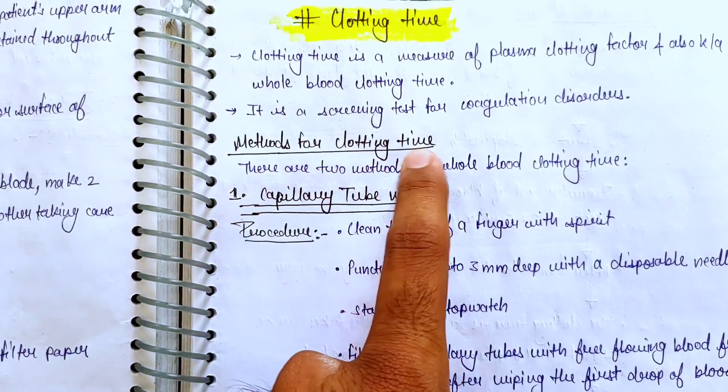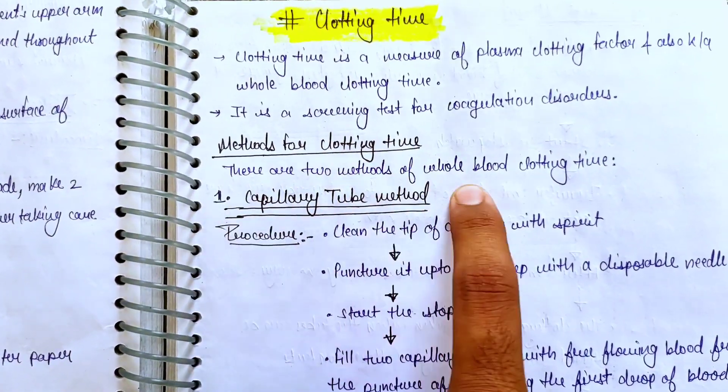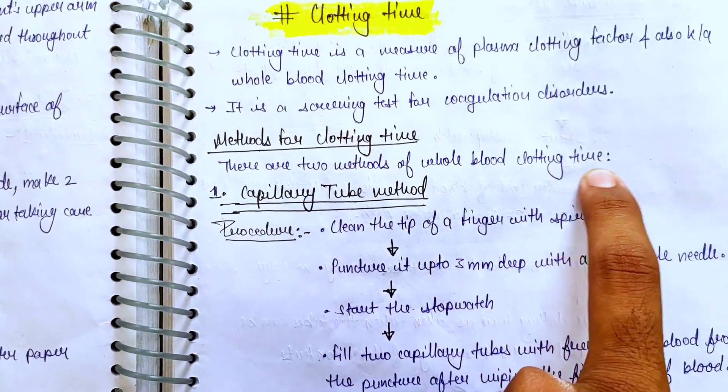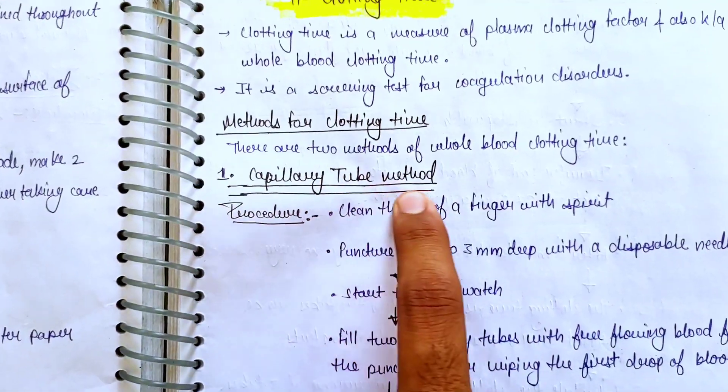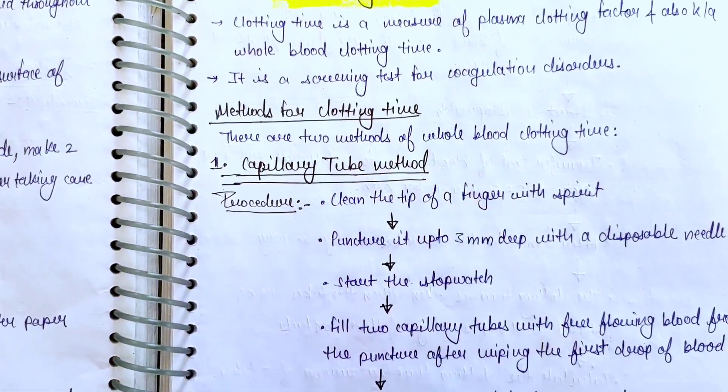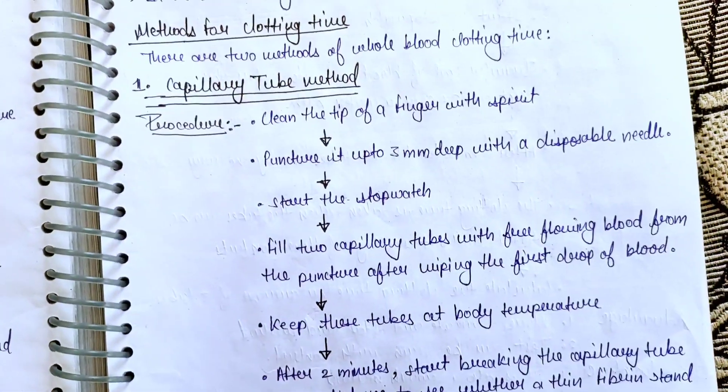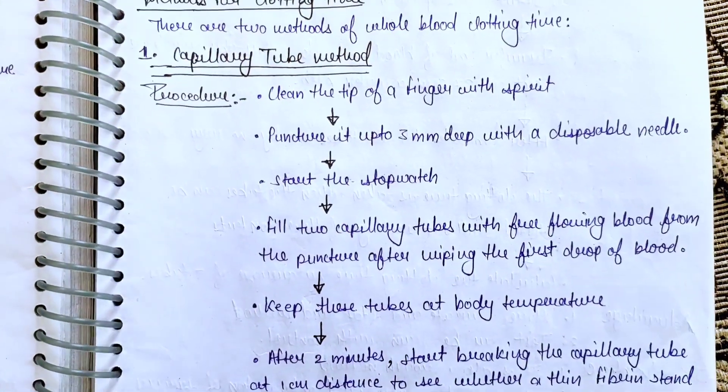What is Clotting Time? There are two methods for Clotting Time. The first is the Capillary Tube Method.